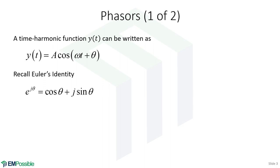There's a really important identity, if you have not seen this before: Euler's identity. It's relating a complex exponential — there's a j up here, and in electrical engineering we use j for the square root of negative one instead of i. Complex exponentials are essentially trig functions: cosine theta plus j sine theta.